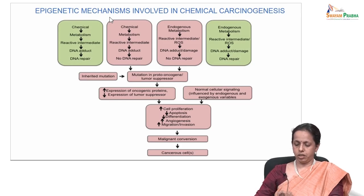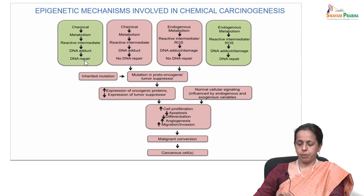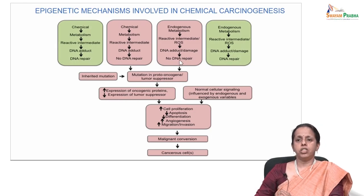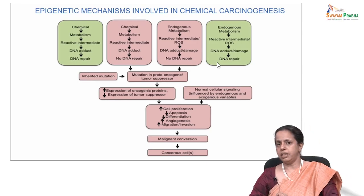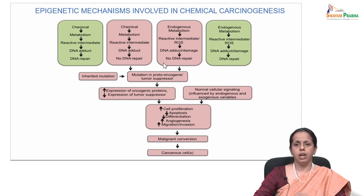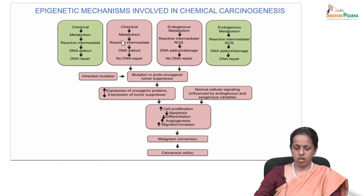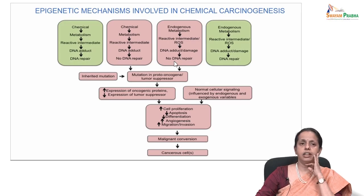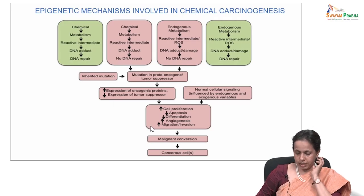Chemicals can be metabolized to reactive intermediates that form adducts with your DNA. If this adduct is not repaired, as described, it goes through to mutations. Combining these two mechanisms — genotoxic and epigenetic — can lead to increased expression of an oncogene or decreased expression of a tumor suppressor. Further, normal cellular signaling can be influenced by endogenous or exogenous variables that collectively alter major pathways regulating cell proliferation, apoptosis, differentiation, and ultimately leading to cancer.